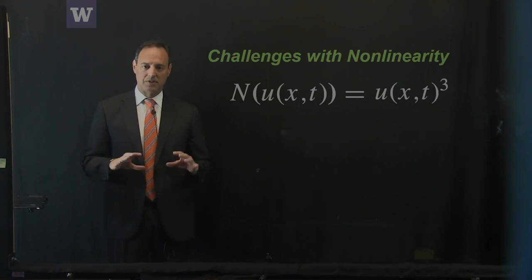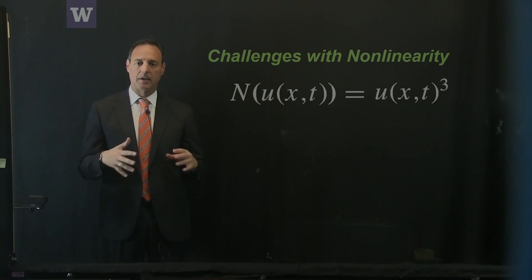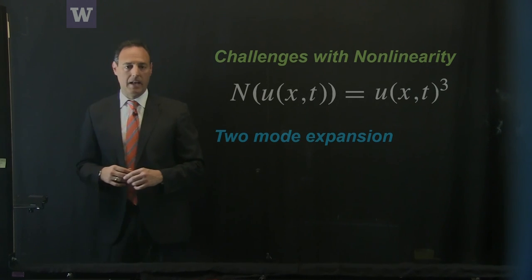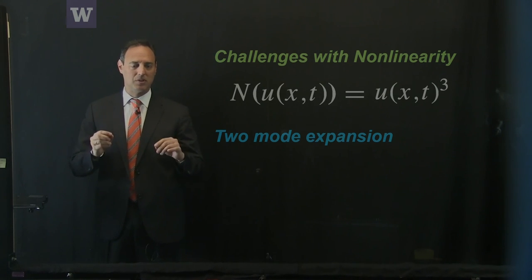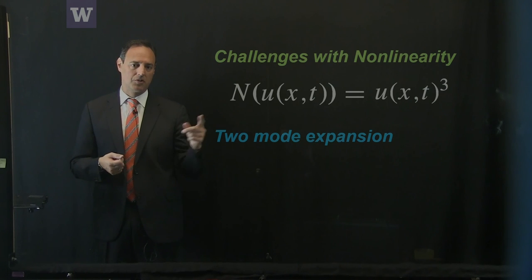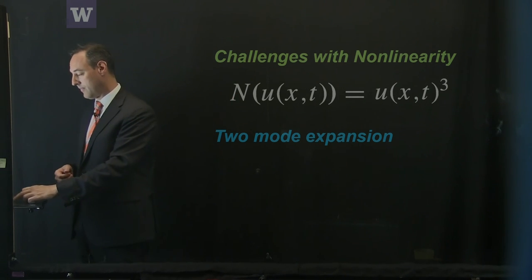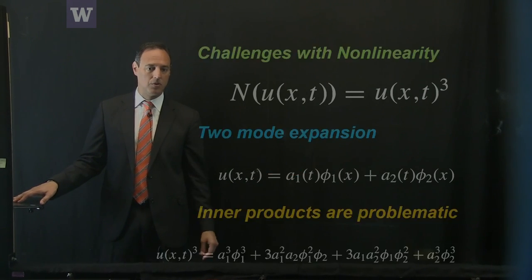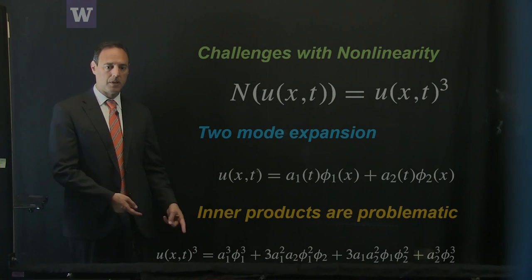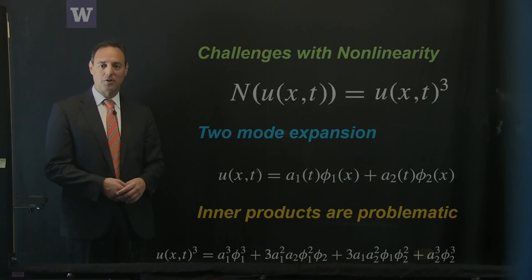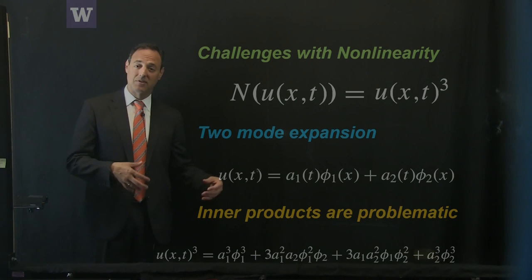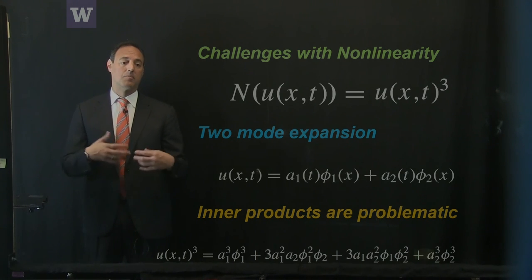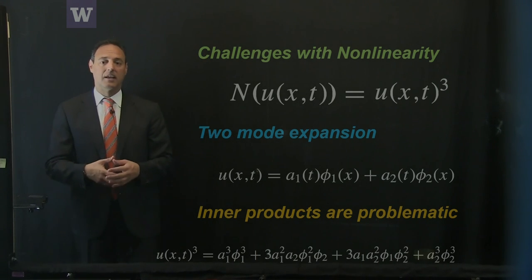To illustrate, take a simple cubic nonlinearity U-cubed with a two-mode expansion — just two POD modes: A1 times mode 1, A2 times mode 2. Running this through the cubic generates quite a few terms, each requiring an inner product. As you update the values of A, you have to redo these inner products. This can get out of hand very quickly, especially with more modes and more complicated nonlinearities.